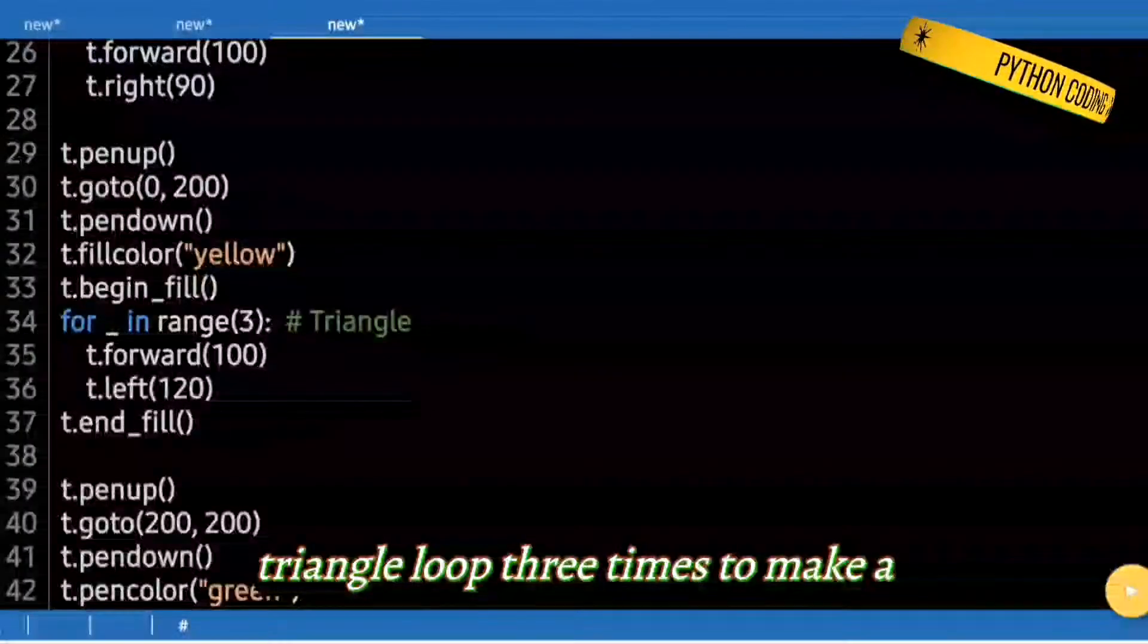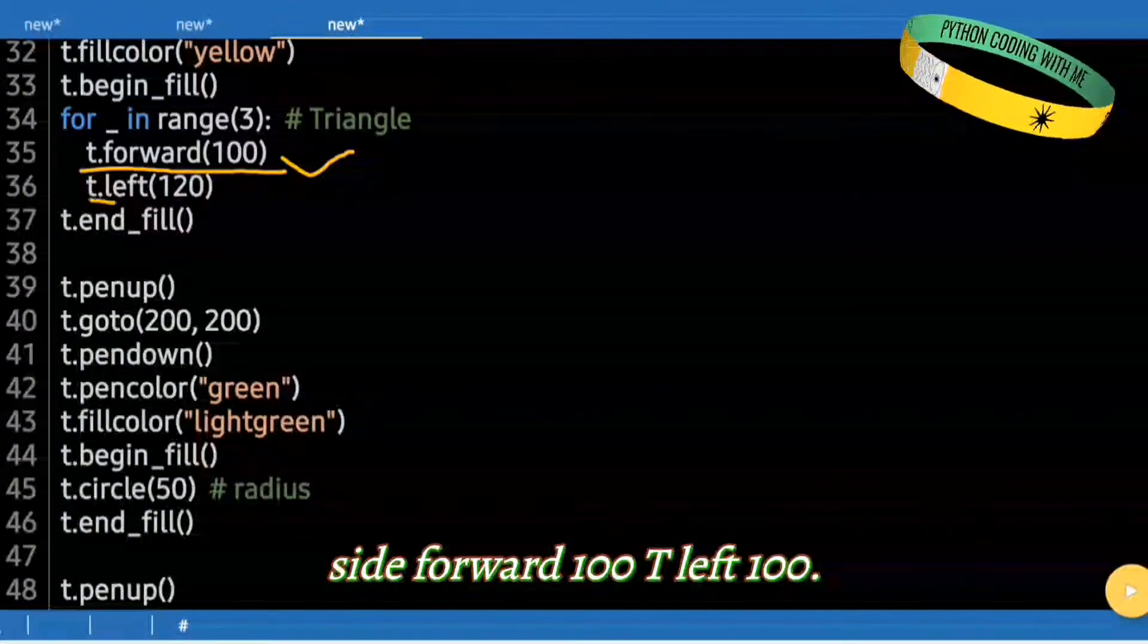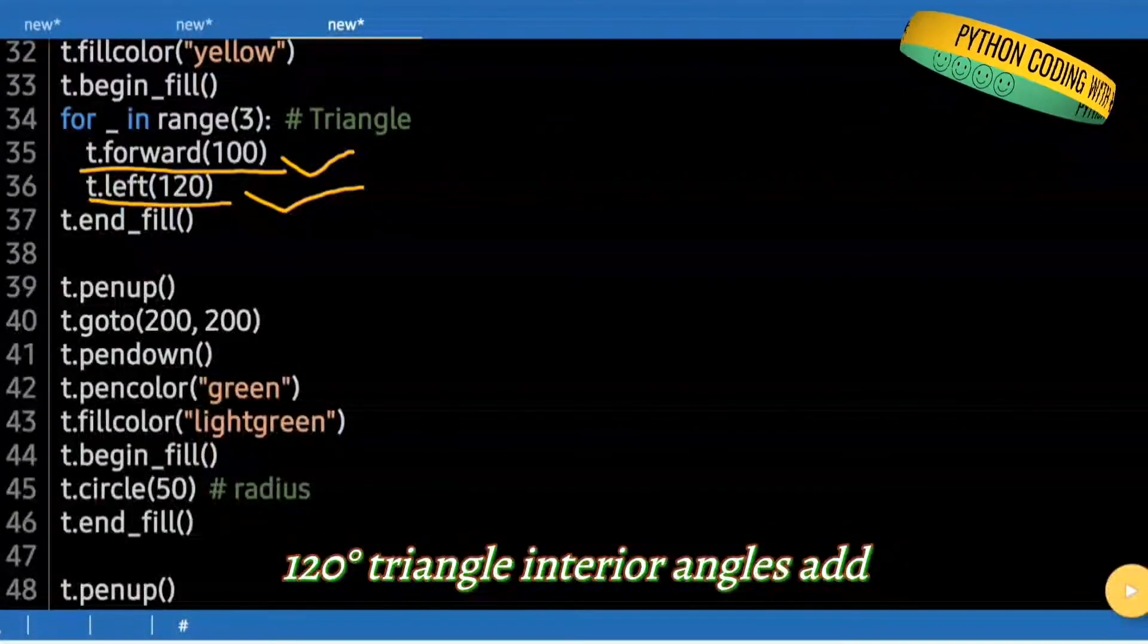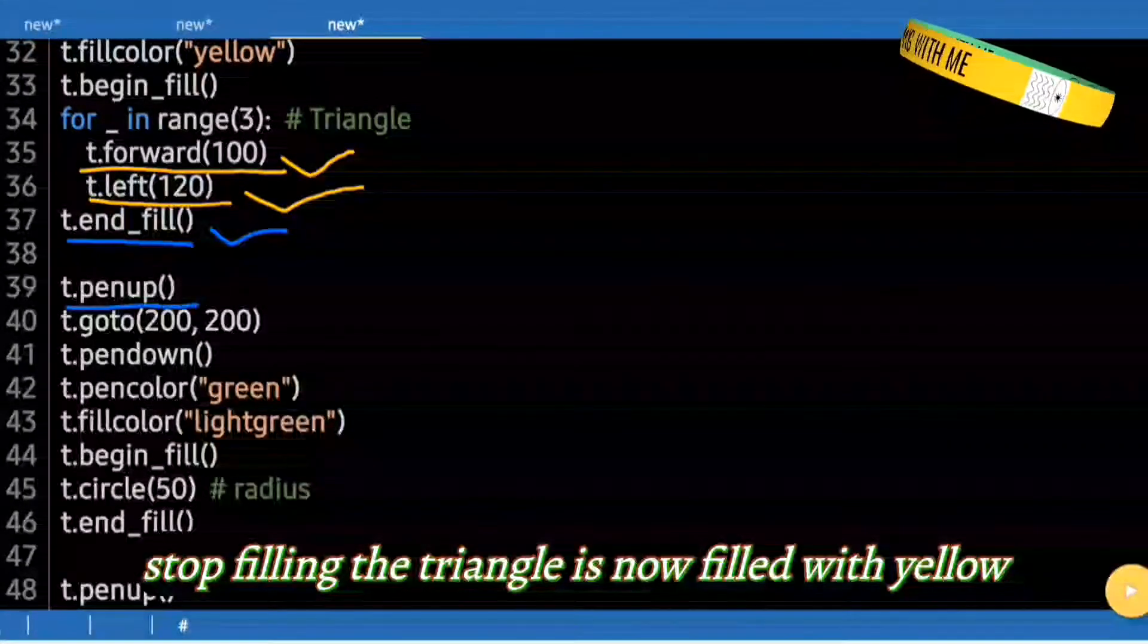Loop 3 times to make a triangle. t.forward(100). Draw a side. t.left(120). Turn left 120 degrees. Triangle interior angles add up. t.end_fill(). Stop filling, the triangle is now filled with yellow.